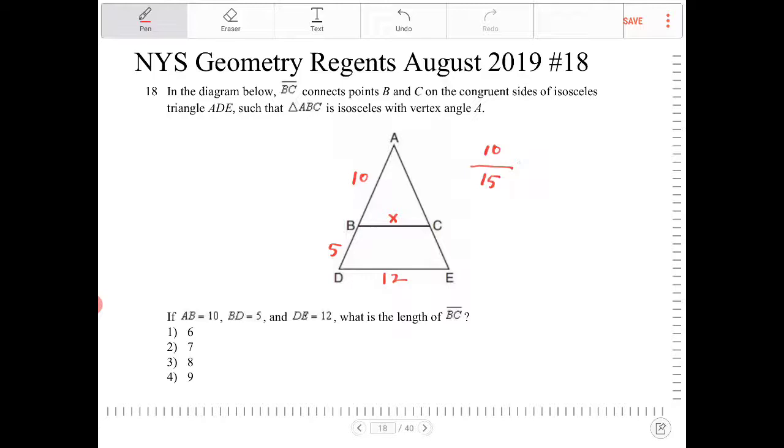So that means all the different sides, all the corresponding sides, will have the same proportion. So therefore I can say that this is also equivalent to X over 12.